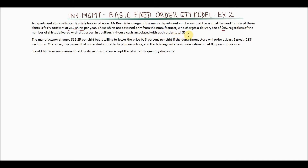In addition, the in-house cost associated with each order is $6 — this covers stationery, printing, and other ordering charges. The manufacturer charges $16.25 per shirt as the purchase cost.